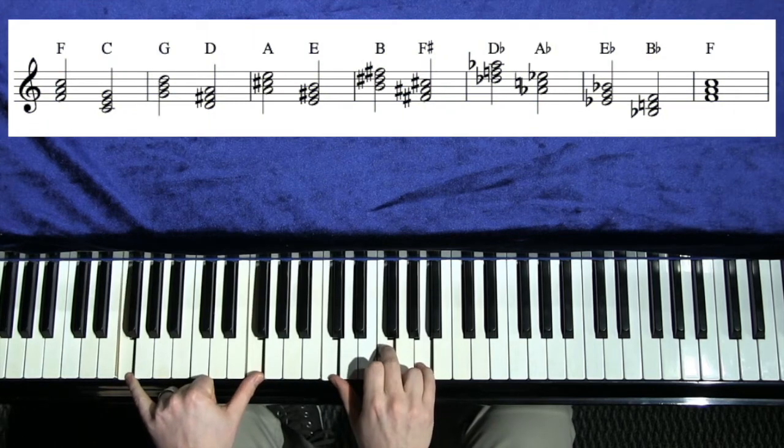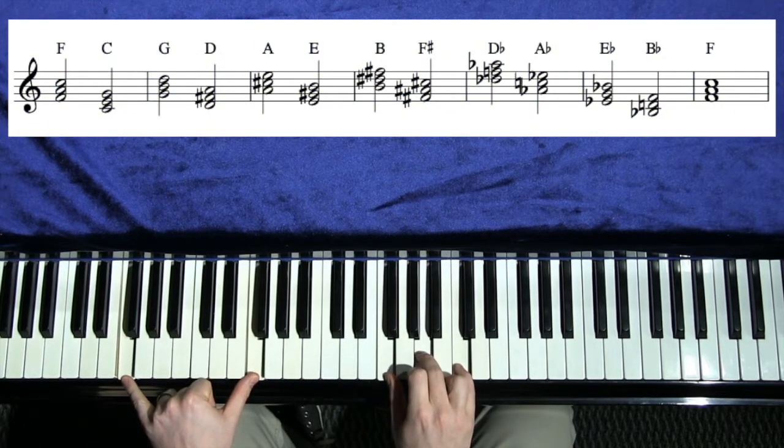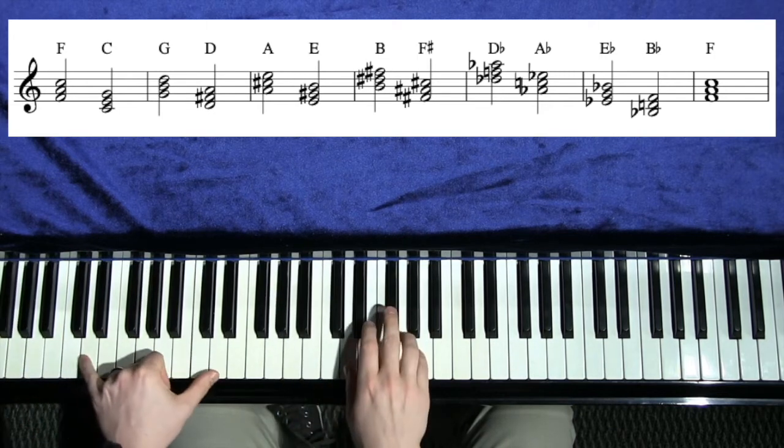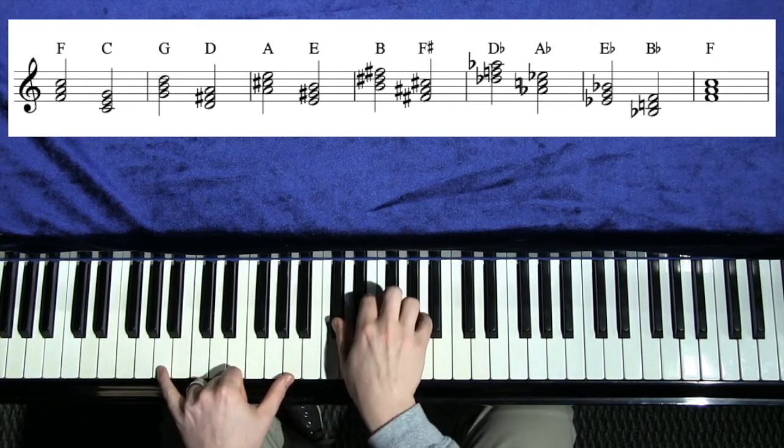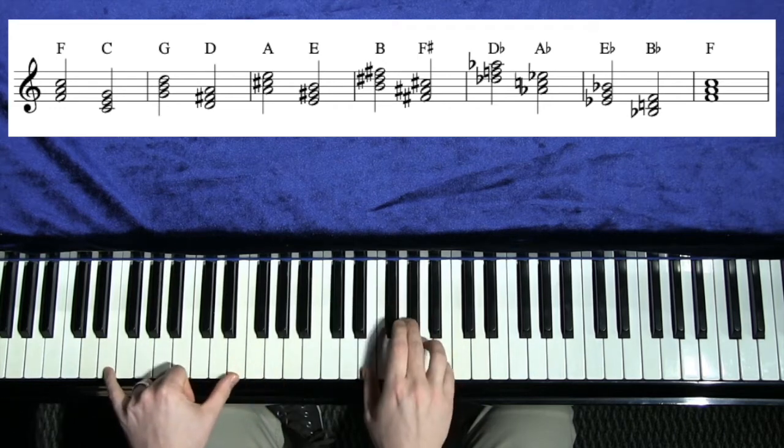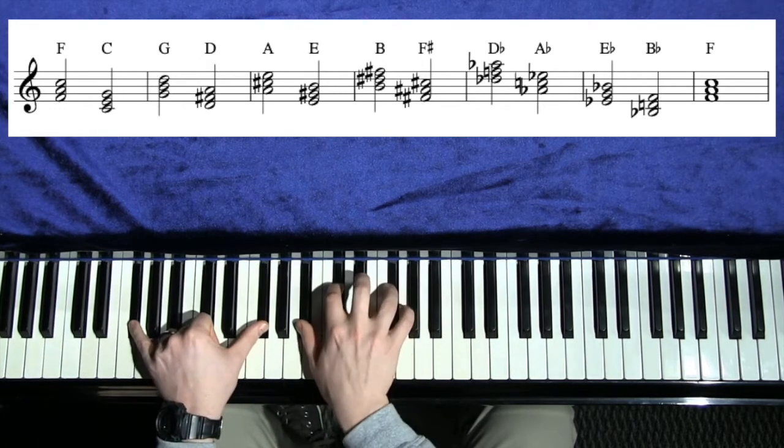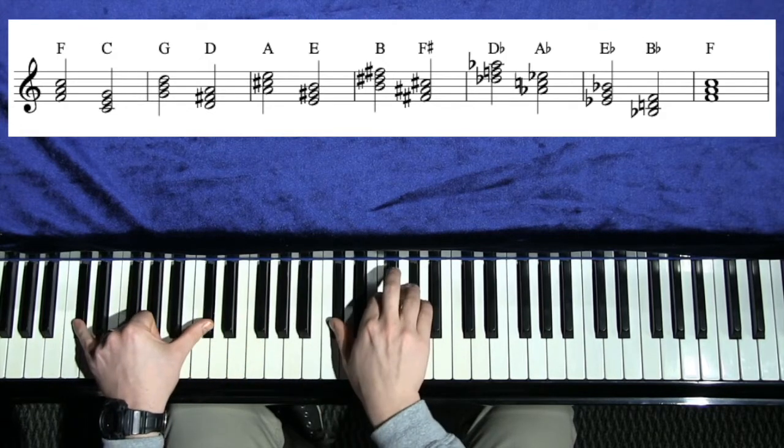So if I start out here, I have an F major chord. If I go down a fourth from here, I have a C major chord, and then a G major chord, and then a D major chord, down a fourth gives me A major, down a fourth gives me E major, down a fourth gives me B major, down to F sharp, down to D flat, and so on.